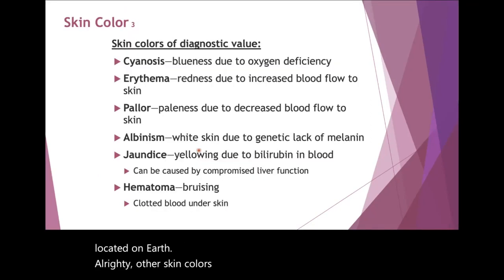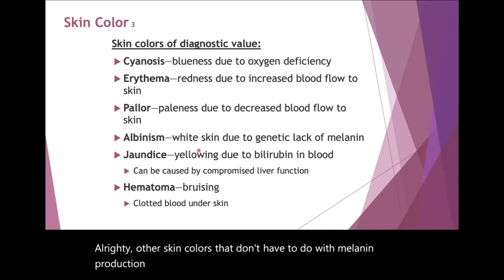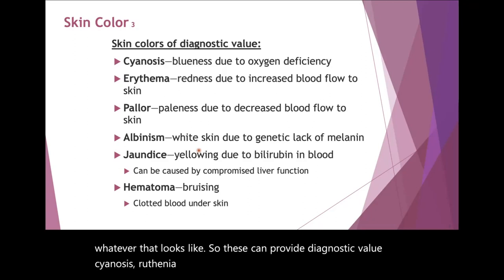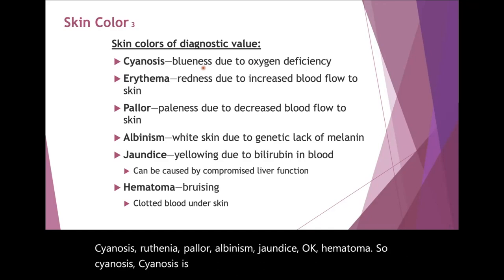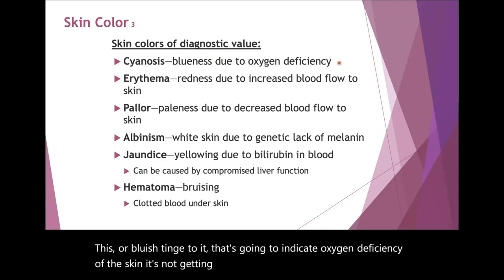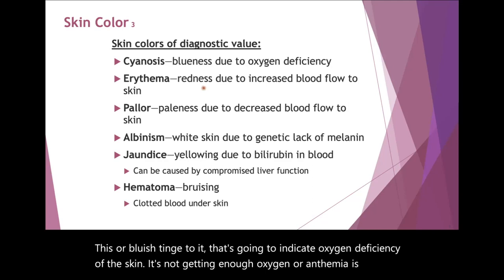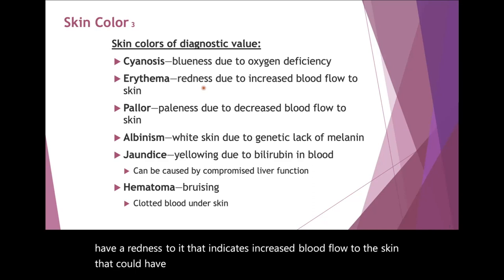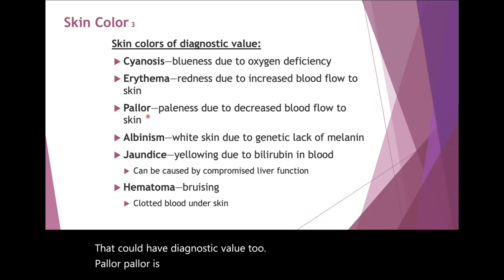Other skin colors that don't have to do with melanin production can provide diagnostic value. These include cyanosis, erythemia, pallor, albinism, jaundice, and hematoma. Cyanosis is when your skin has a bluish tinge, indicating oxygen deficiency. Erythemia has a redness indicating increased blood flow to the skin. Pallor is paleness due to decreased blood flow to the skin. Oxygen deficiency is not exactly the same as decreased blood flow — you can still have blood flow but not enough oxygen to the area.